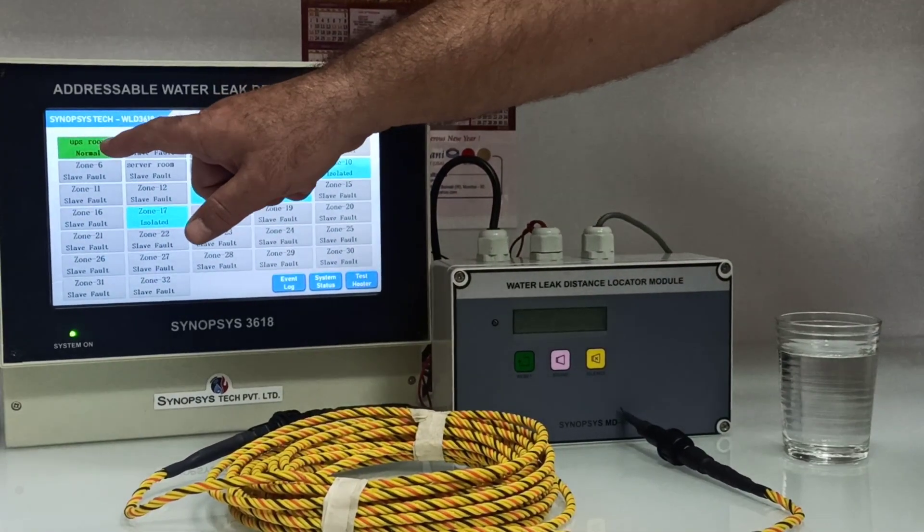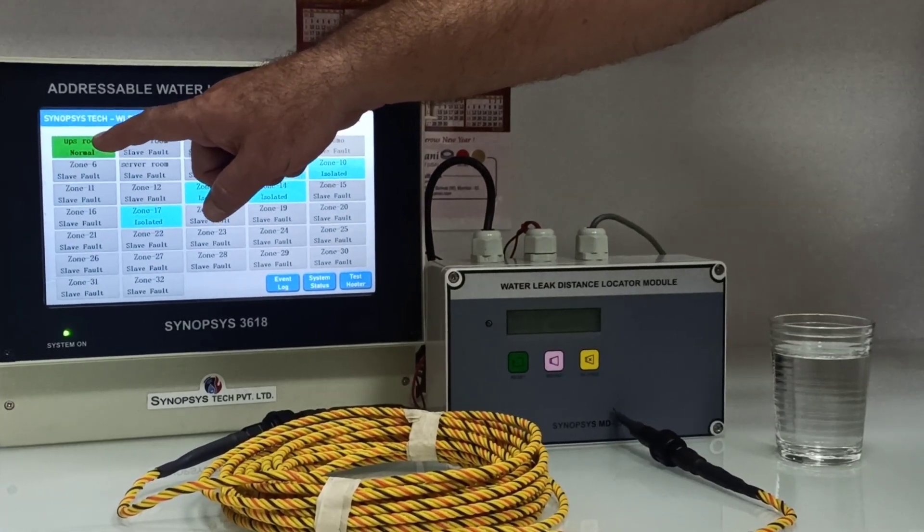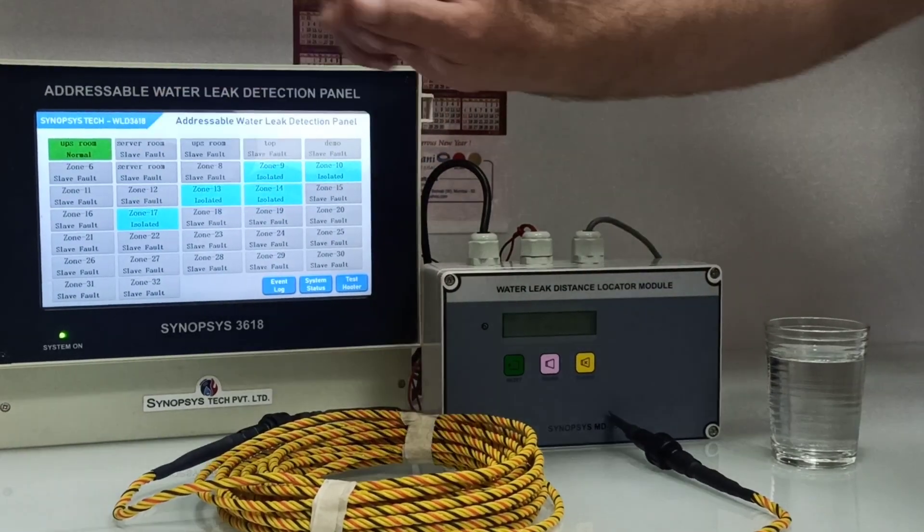As and when there is a leak occurred this will turn red. As and when there is a cable fault it will turn yellow.